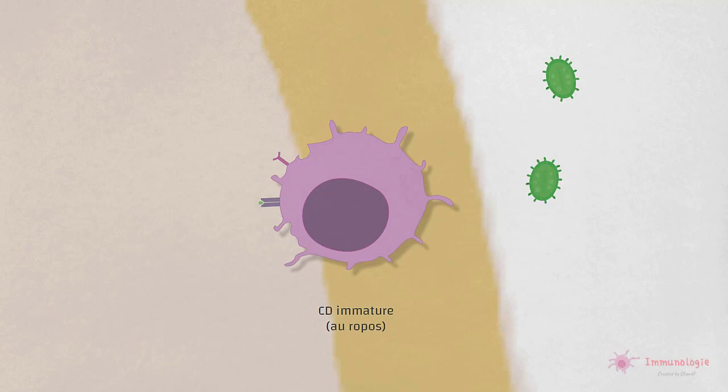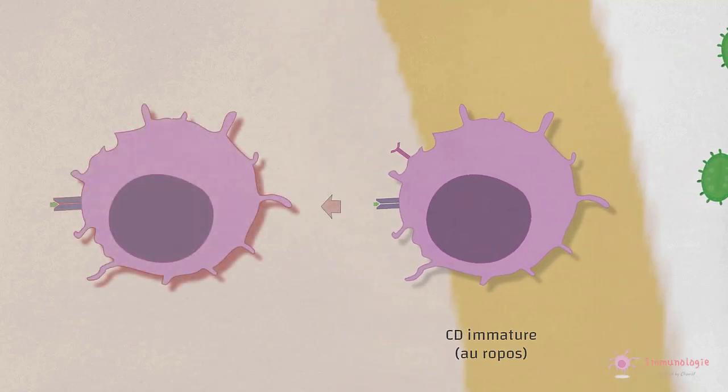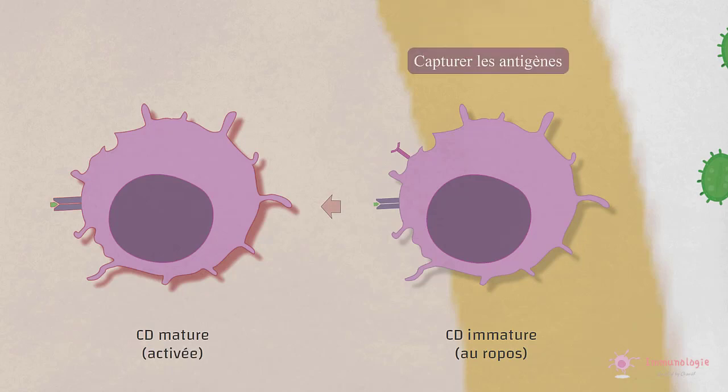Simultanément, mais indépendamment de la présentation antigénique, les cellules dendritiques sont activées par des produits microbiens ou par des cytokines produites par certaines cellules en réponse à l'infection. L'activation convertit les cellules dendritiques, des cellules dont la fonction principale est de capturer l'antigène, en cellules capables de présenter les antigènes aux lymphocytes T naïfs. Elles expriment des niveaux élevés de molécules de CMH ainsi que des molécules de costimulation nécessaires à l'activation des T.